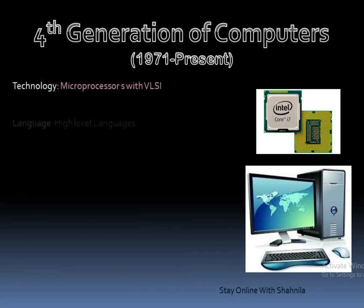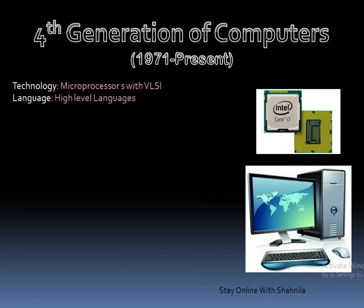Microprocessors were very small chips. High-level languages close to the English language — user-friendly languages — were used for programming. This made computers easier to use, so in fourth generation computers the use of computers increased greatly because everybody was able to write programs in high-level language close to English.